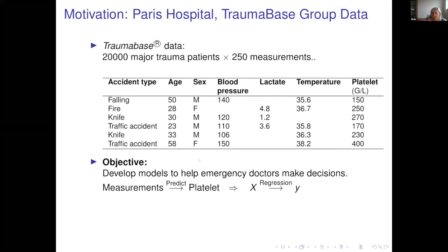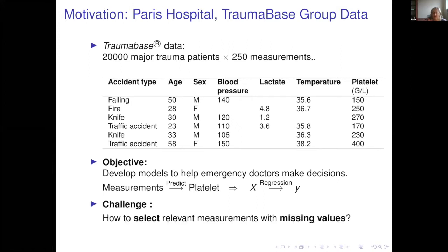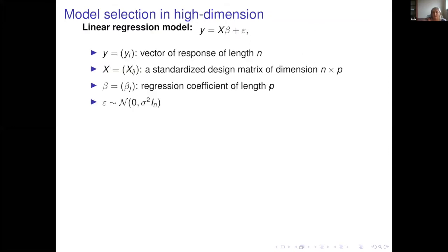One of the major indicators is the number of platelets, which is a measurement that cannot be taken in the ambulance. We would like to predict the number of platelets based on measurements which can be taken in the ambulance. So we want to build a relatively simple regression model to predict the platelet count from available measurements. The challenge is how to select relevant measurements given missing data.